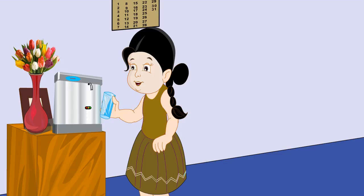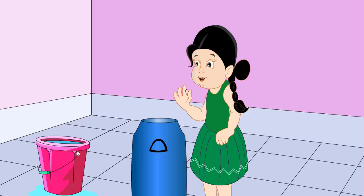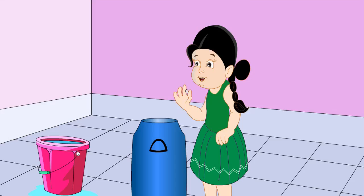Water can also be filtered with a water filter. Electronic filters remove impurities and kill germs too. Chlorine may also be added to water to kill germs and make it safe for drinking.